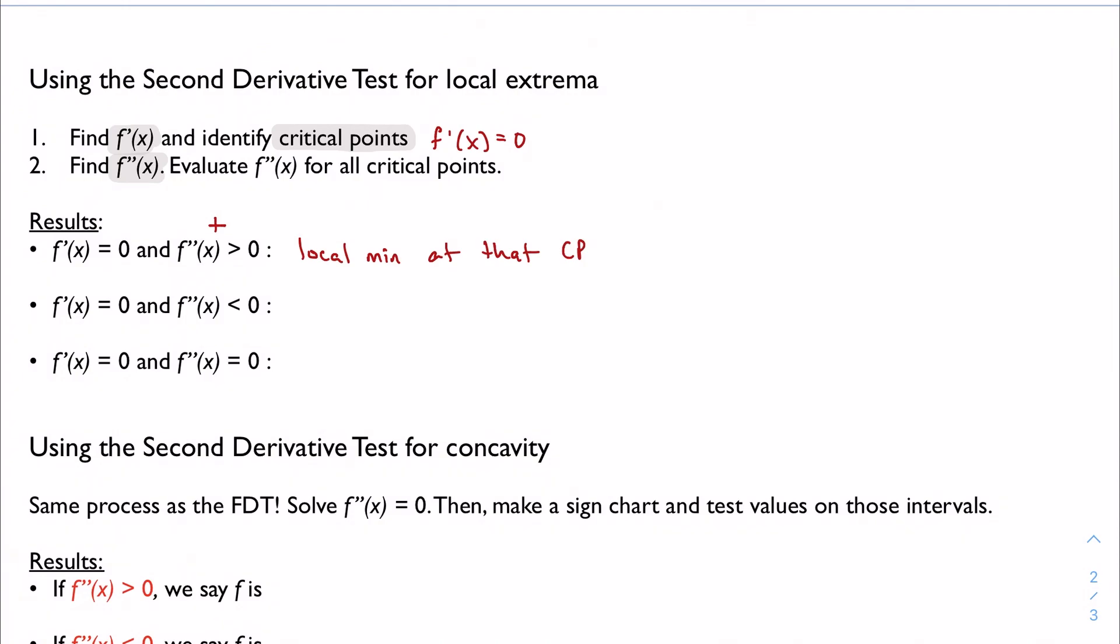It's the reverse for the next case. So again, if the first derivative is zero, that means it's a critical point. And the second derivative is negative, again, it's counterintuitive here, I have a local maximum at that critical point.